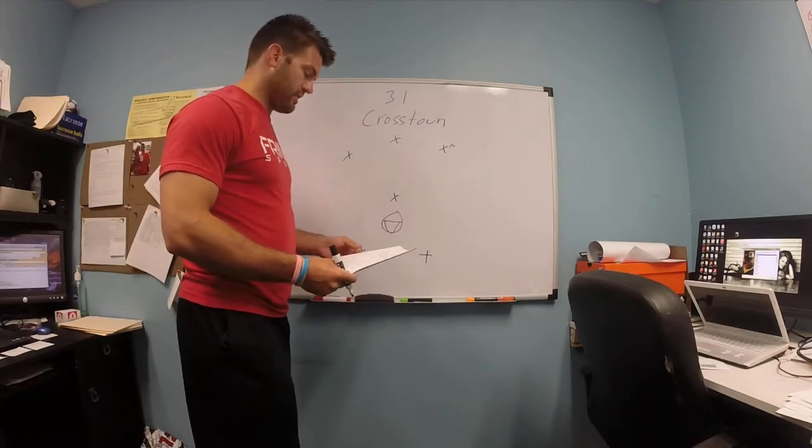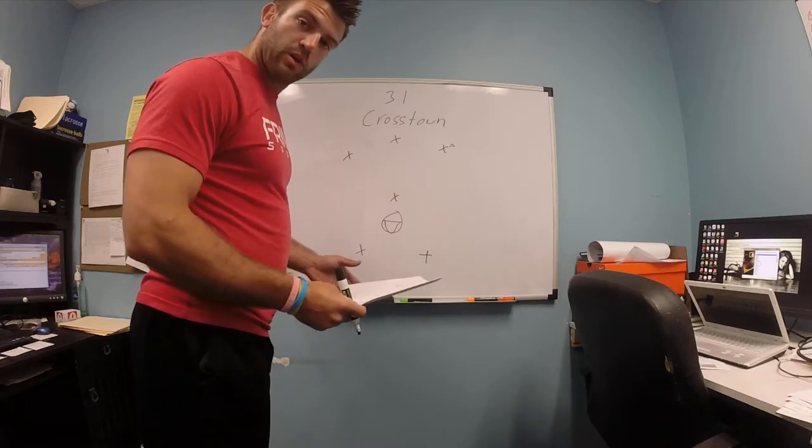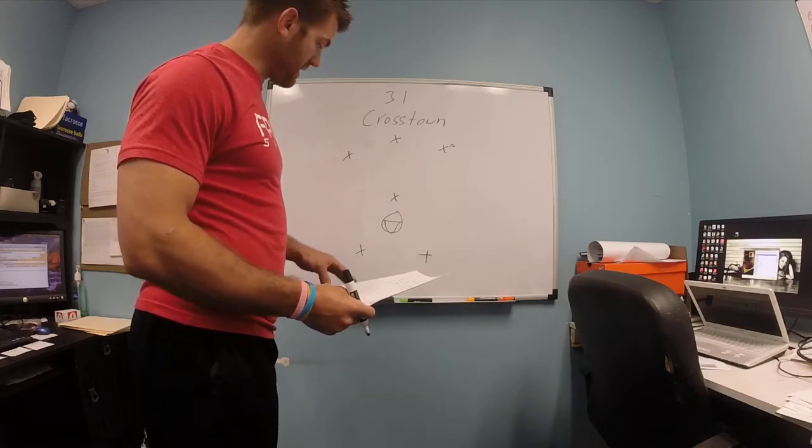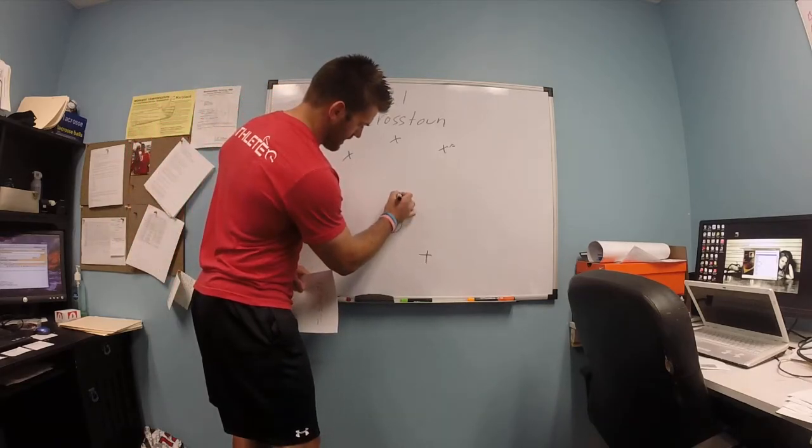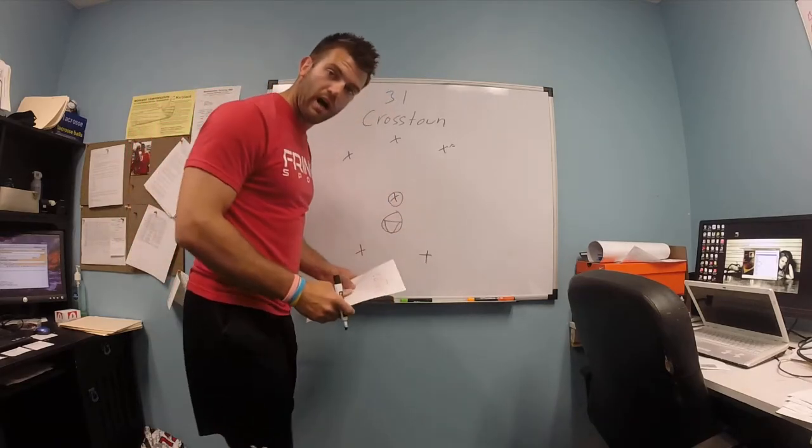Right now we're going to go over 31 Crosstown. When we yell out 31 Crosstown, the biggest thing that we want to do is if we have a lefty on the field, we want to get this lefty right here. And you'll see why in a second.